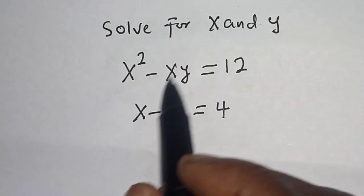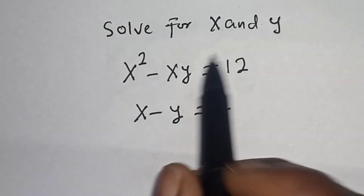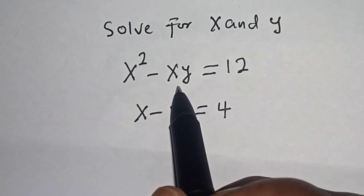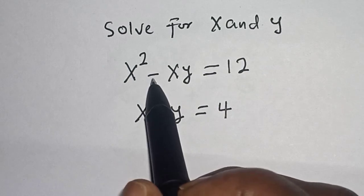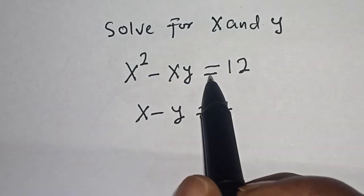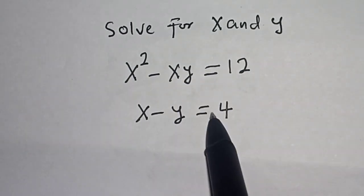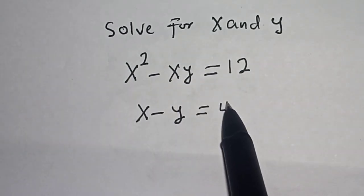Hello, welcome to Magist. In this class, we want to find the value of x and y from this given equation. x squared minus x y is equal to 12, and x minus y is equal to 4.